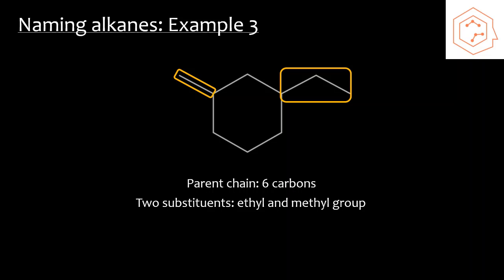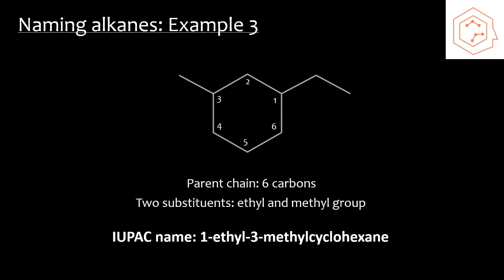Next we're going to want to number it so that the substituents are attached to the carbon with the lowest number. With ring structures, you have the advantage that there are no ends, so carbon 1 can simply be the carbon already attached to a substituent. But you still want to ensure that the next substituent, if there is one, is attached to the carbon with the lowest number. Here we could go two directions. It makes more sense to go the direction where the methyl group ends up being connected to carbon 3, as opposed to the other way around where it would be connected to carbon 5. Now that we have all that information, we can combine it so that we have the final IUPAC name of 1-ethyl-3-methylcyclohexane.